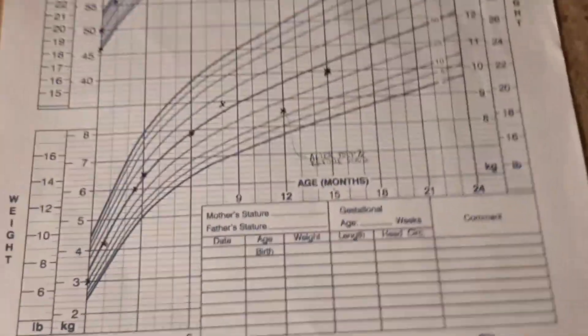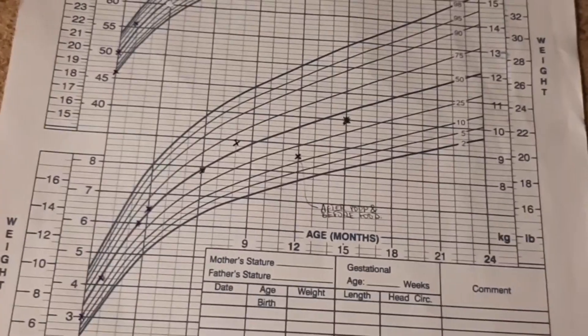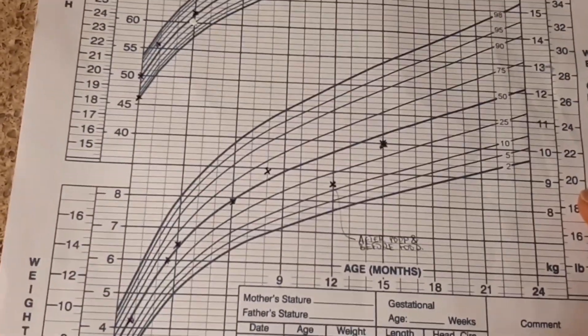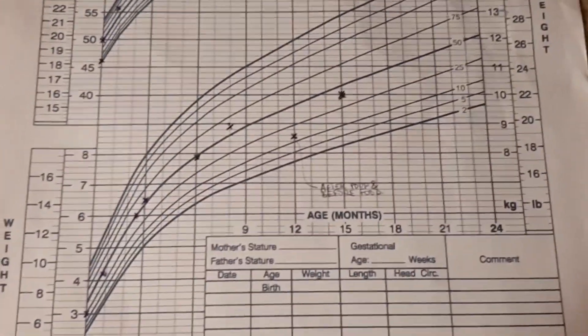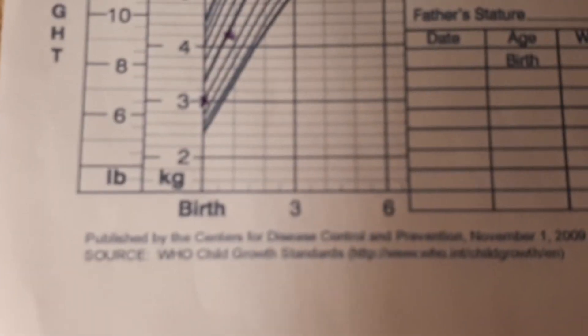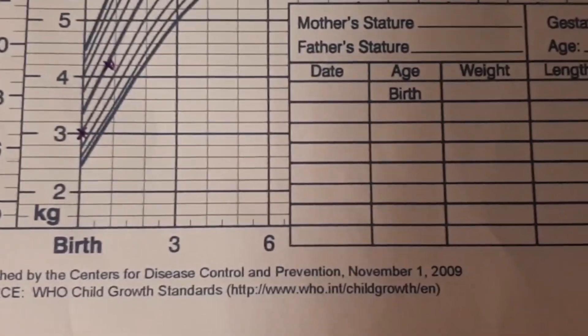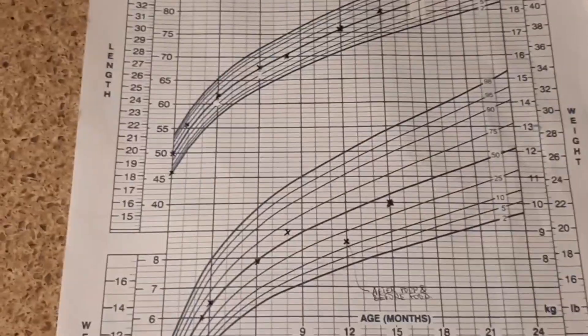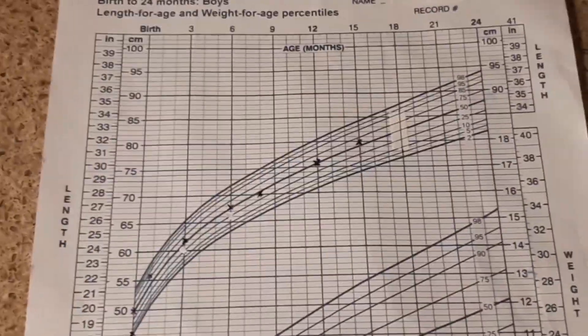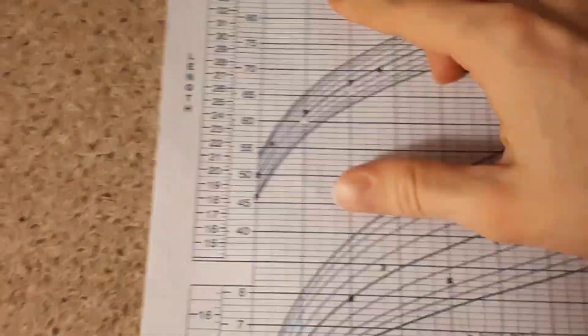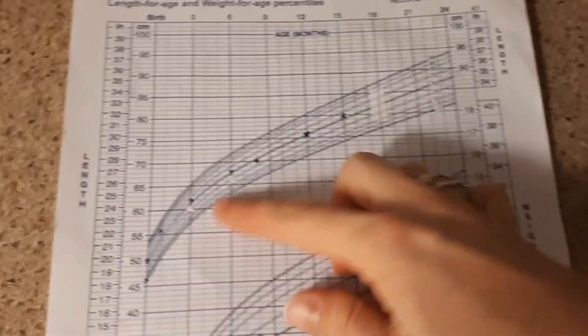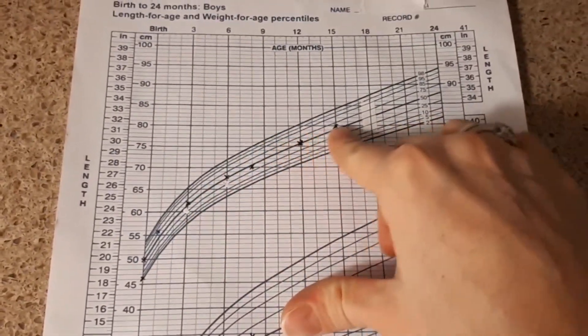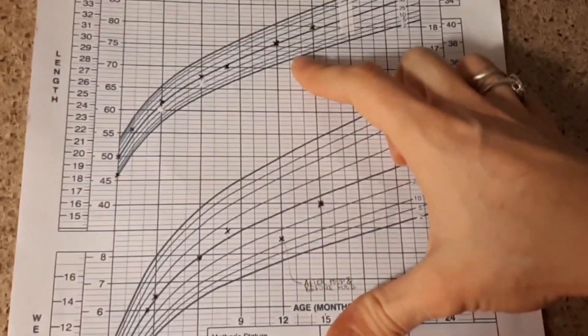Today I'm going to talk about baby growth for babies zero to 24 months. I'm using this chart from the WHO — the World Health Organization — which gives a very good overview of weight and length of your baby. It allows you to mark on paper how long your baby is and the weight.